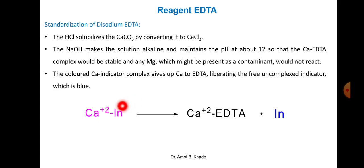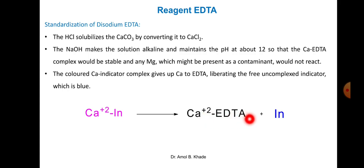EDTA will compete with the indicator, breaking down the calcium-indicator complex. As EDTA is added from the burette, it takes the place of the indicator and forms its own complex with calcium. Slowly, as the titration proceeds, the indicator is released in its free form, which is blue. You will see the color transition from pink to faint pink to blue — the blue color is the endpoint, indicating the color change from pink to blue.